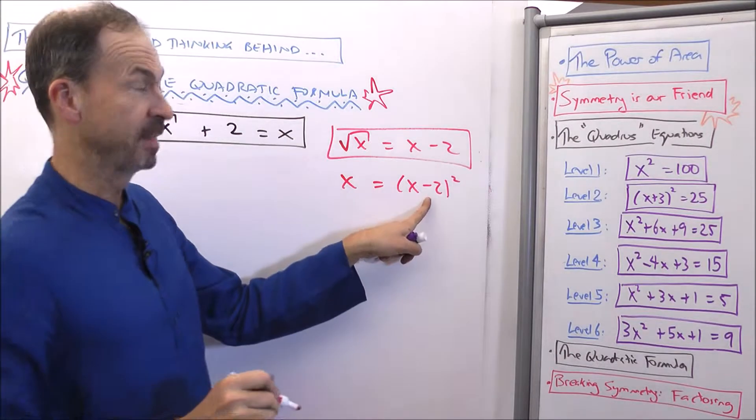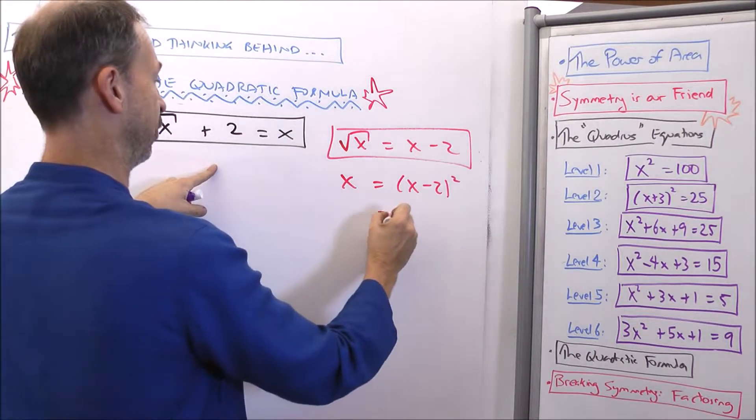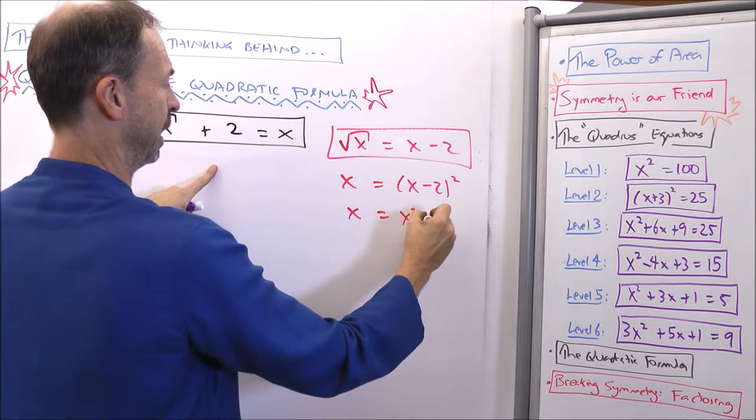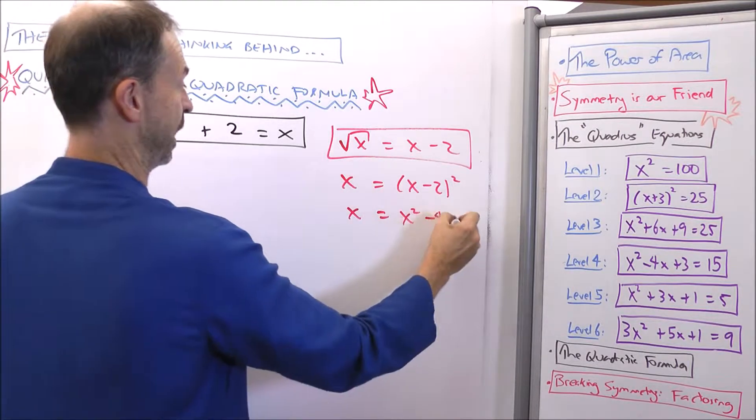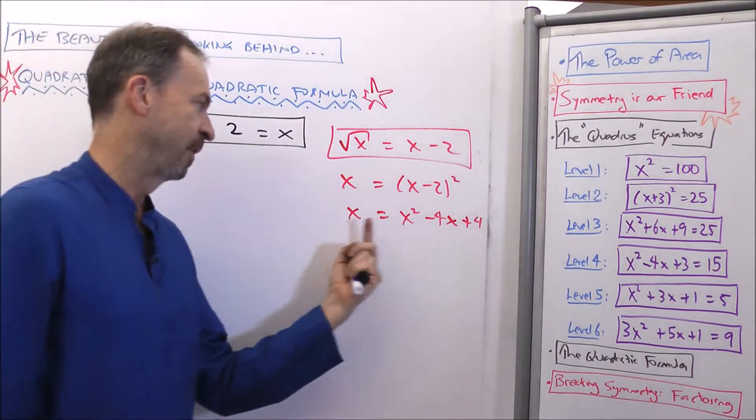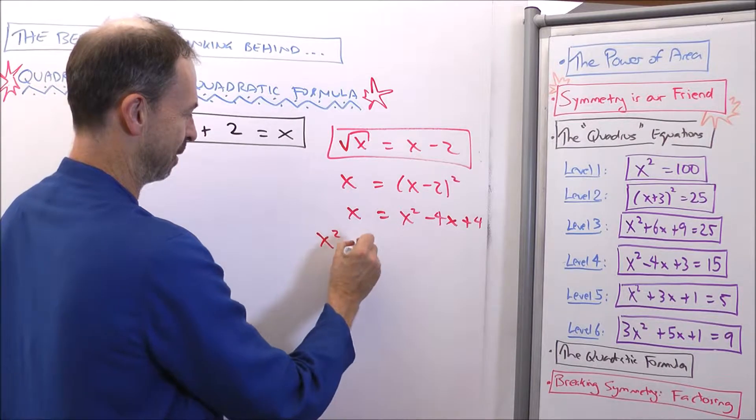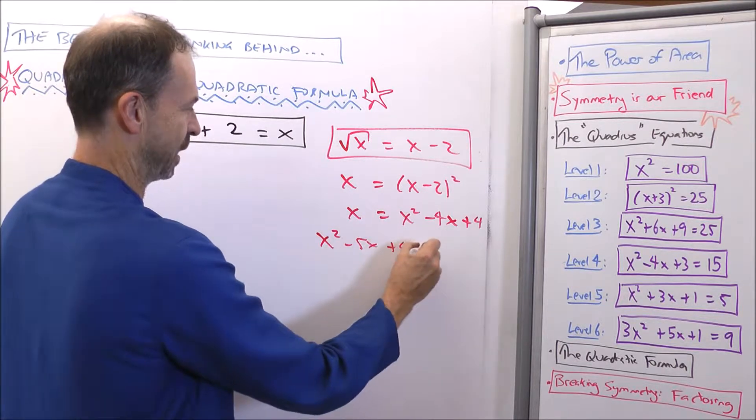So x would have to equal x minus 2 squared. In which case, I can expand this out. So in my mind, I'll draw a little x minus 2, x minus 2. So I see this is really x equals x squared minus 4x and a plus 4. I've got x over here and some negative 4x is over yonder. So I put it all together, x squared minus 5x plus 4 equals 0.